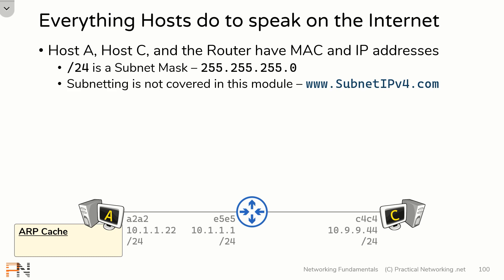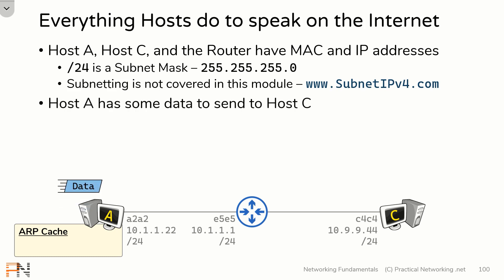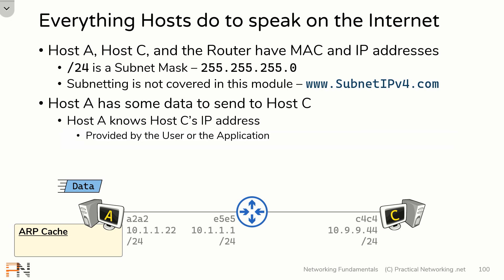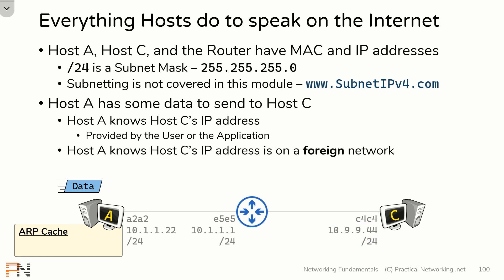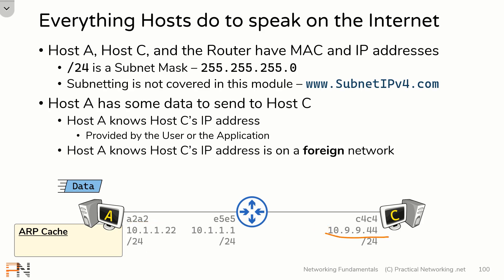We're going to show you its functionality as host A has some data to send to host C. Host A already knows host C's IP address — that IP address could have been provided by the user or by the application creating the data meant to be sent to host C. One way or another, host A already knows the IP address it's trying to speak to, and in particular, host A knows that IP address is on a foreign network. It's going to know this by looking at its own IP address and subnet mask and comparing it with the target IP address.